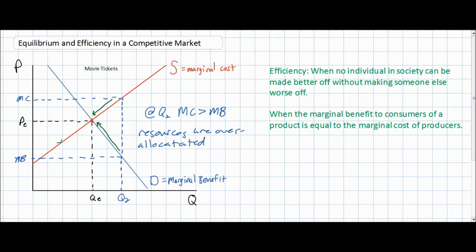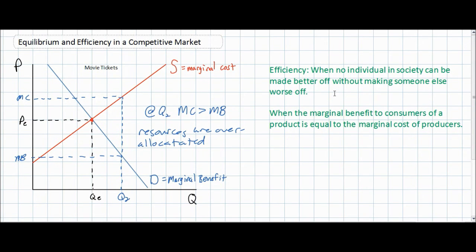Let's examine the effects on consumer and producer surplus at a quantity of Q2 to determine whether any individual is made better off at the expense of another. In order to achieve Q2, producers would require a price equal to their marginal cost at Q2, so the price of movie tickets would have to be much higher than PE — equal to P2. At this price, we can examine whether Q2 corresponds with a greater or smaller overall level of consumer and producer surplus.